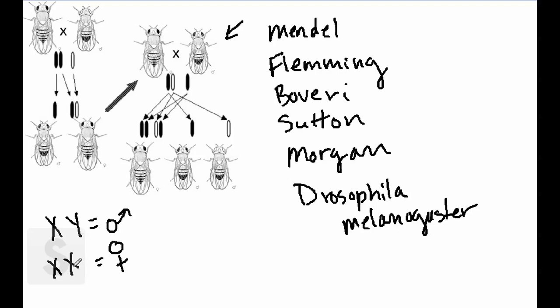In Morgan's experiments, he would take a white-eyed male fruit fly, as you can see here, and cross it with a red-eyed female. Now, the red eye is the normal trait that fruit flies usually have.